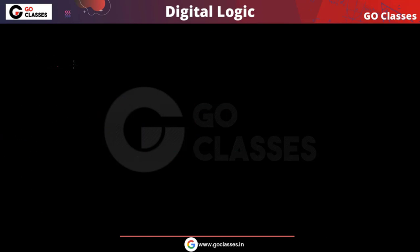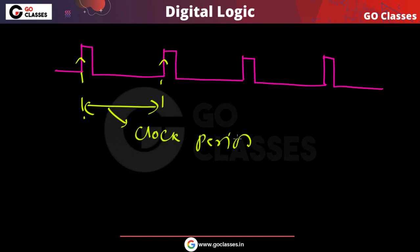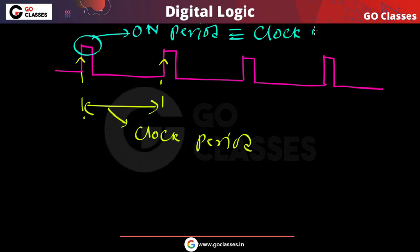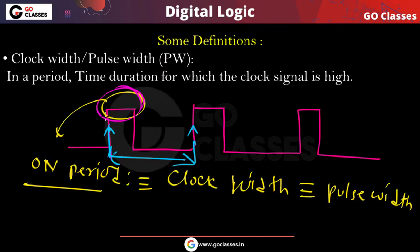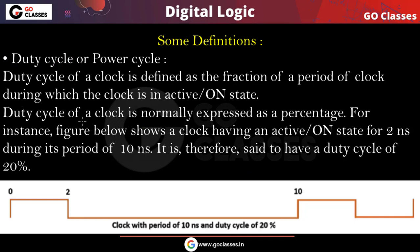Consider this clock — the clock period is from this rising edge to this rising edge. But in this clock period, for only a very small amount of time the clock is high — that small on period is the clock width or pulse width. So in one clock you can see the pulse width is very low, and in another the pulse width is comparatively high. That is the concept of pulse width.